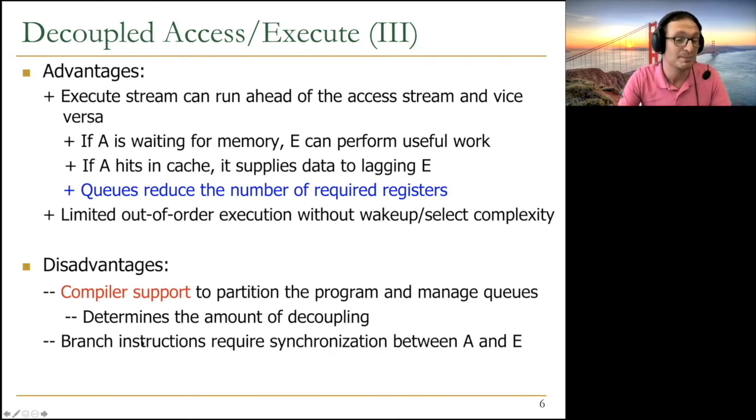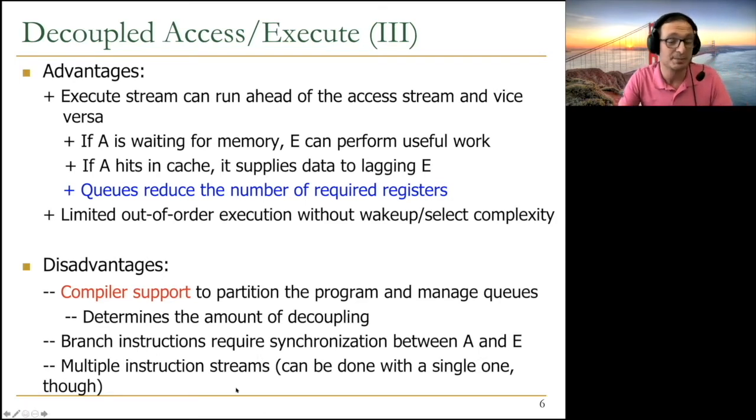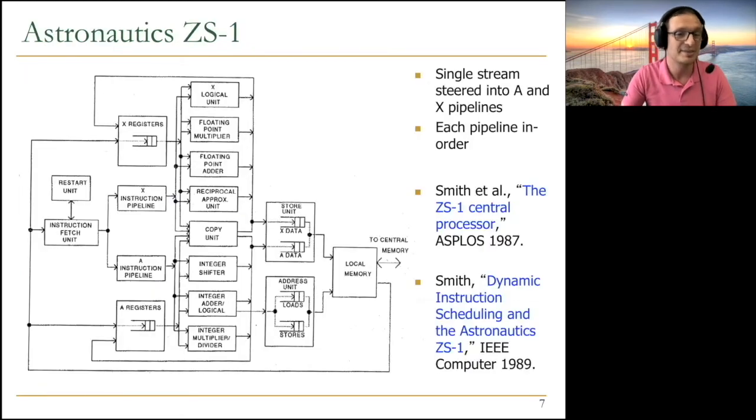And one other disadvantage is branch instructions require synchronization between A and E, because you're actually taking a single instruction stream and separating it into two instruction streams. What happens to branches? They get executed in the execute processor, but you need to signal the access processor to make sure that the access processor is not on the wrong path forever. The other disadvantage is multiple instruction streams. Basically, you need to generate two instruction streams or program two instruction streams, which may be cumbersome, but later work showed that this can be done with a single one by taking the single instruction stream and stringing it dynamically into multiple processors.